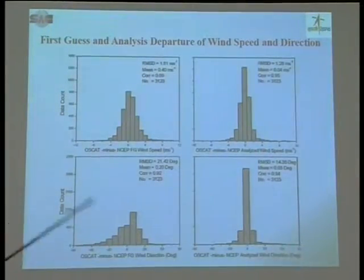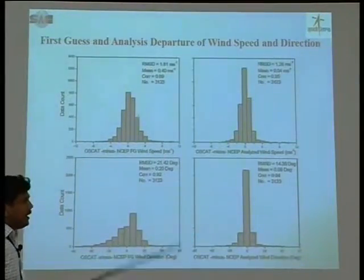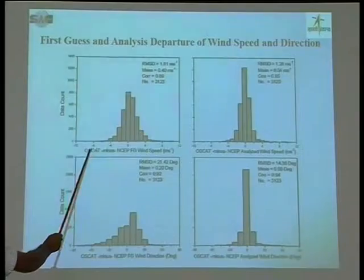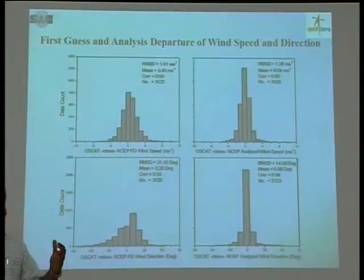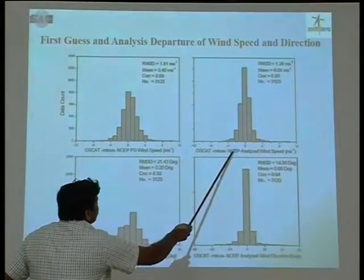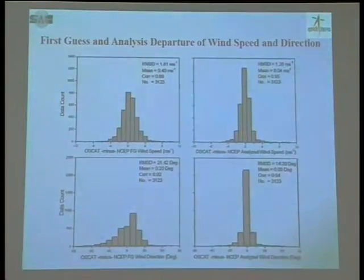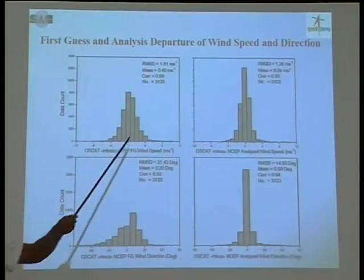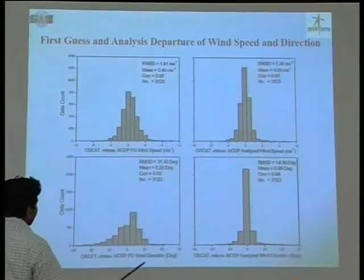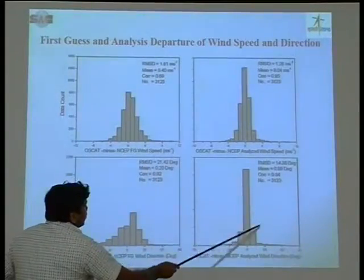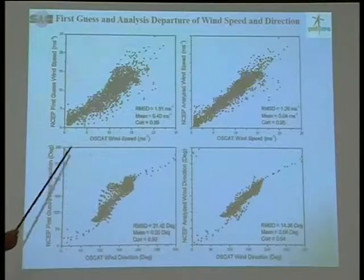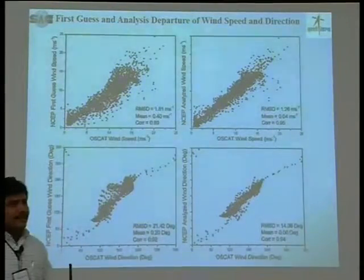This assimilation diagnostic plot shows error before and after assimilation — observation minus first guess, meaning observation minus background. After assimilation, the error is reduced and the bias converges toward zero, which is the aim of our assimilation scheme: the analysis should be closer to the observations. In both wind speed and wind direction, our analysis is closer to the observations after assimilation. The same result is reproduced as a scatter plot, confirming that after assimilation our analysis is nearer to the observations.